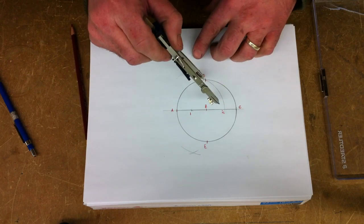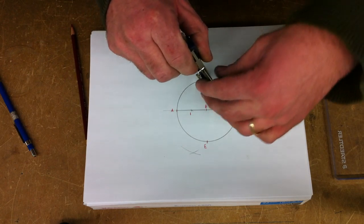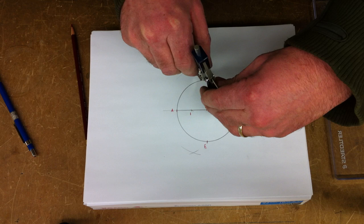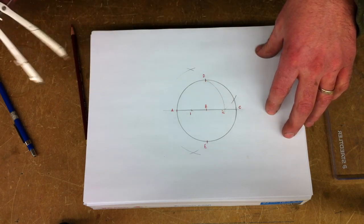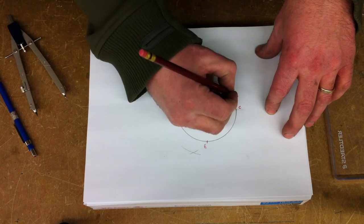We take the distance D2 and scribe it through the edge of the circle, creating a new point 3.